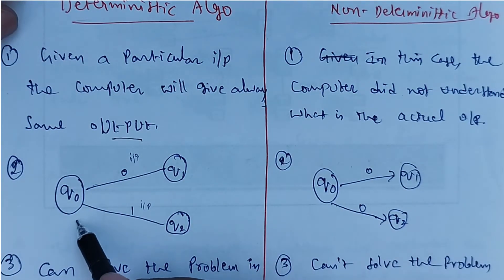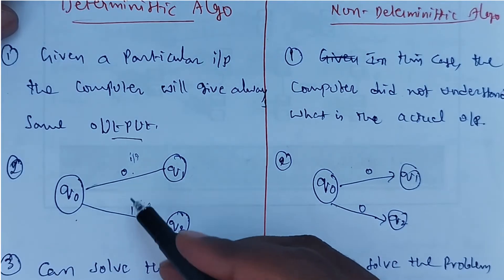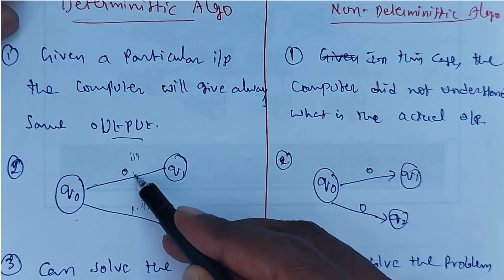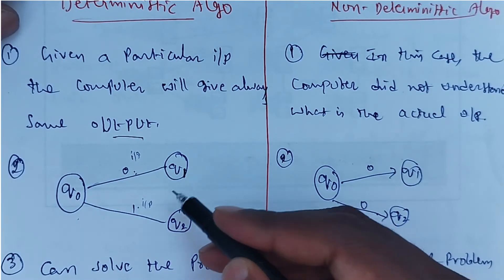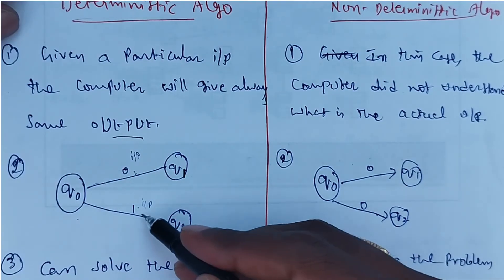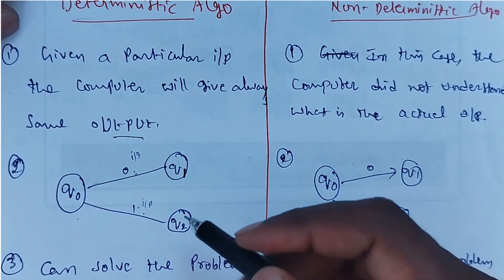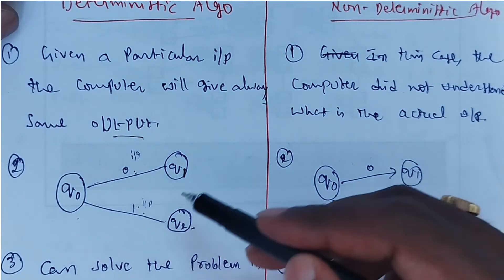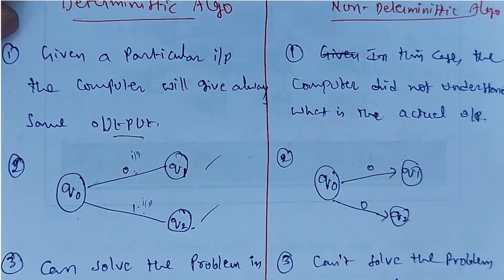For example, if you are given state q0 with inputs 0 and 1 — if you give 0, the output is q1; if you give 0 again, the output is q2. For every time you give the same inputs, you get the same outputs — this is the deterministic case.